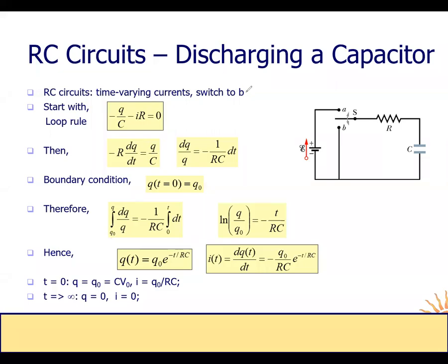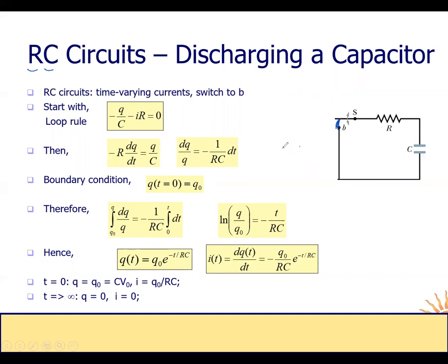Here I want to discharge a capacitor. In this case we use the same RC circuit — we have a resistance and a capacitor — but here we have to switch to B. We don't need to use the battery because I need to discharge the capacitor. We put the switch to B, so in this case we have only this side of the circuit.